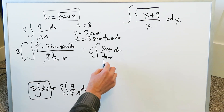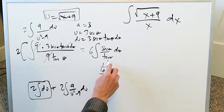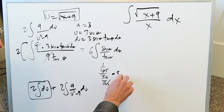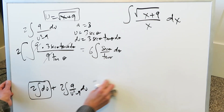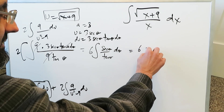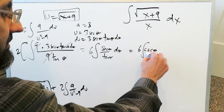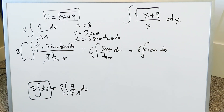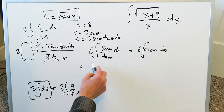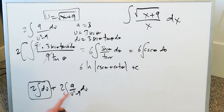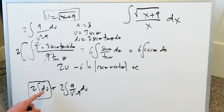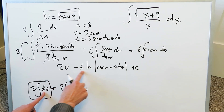I have secant theta in the numerator and a single tan theta in the denominator. You can simplify this: secant theta is 1 over cosine, and tan theta is sine over cosine, so secant over tan simplifies to cosecant theta. All of this translates into 6 times the integral of cosecant theta. The antiderivative of cosecant theta gives: 6 times natural log of |cosecant theta plus cotan theta|, with a minus sign attached. And for the easy part, the antiderivative of 2 integral du is simply 2u, brought in right here.